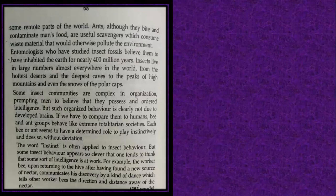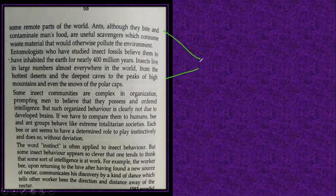In some remote parts of the world, ants are also everywhere and moving around. Ants, although they bite and contaminate human food, are useful scavengers which consume waste material that would otherwise pollute the environment. Etymologists who have studied insect fossils believe them to have inhabited the earth for nearly 400 million years. Insects live in large numbers almost everywhere in the world — from the hottest deserts and deepest caves to the peaks of high mountains.